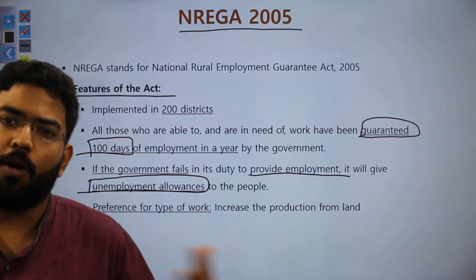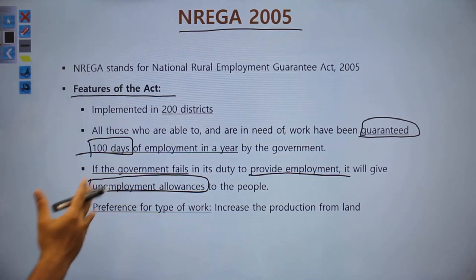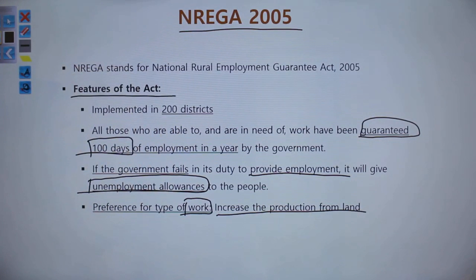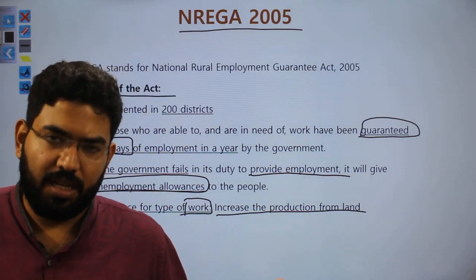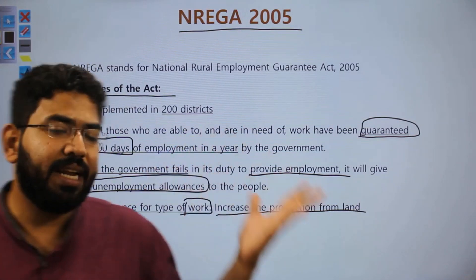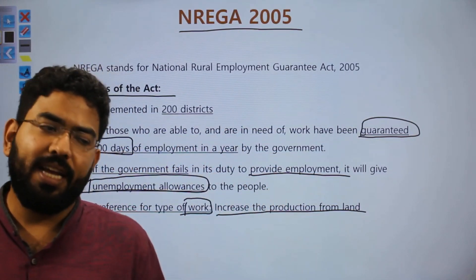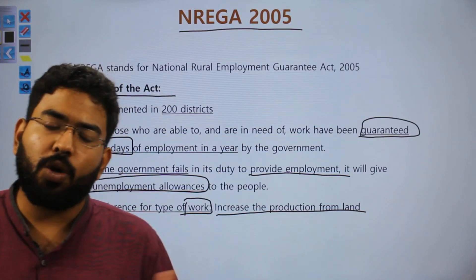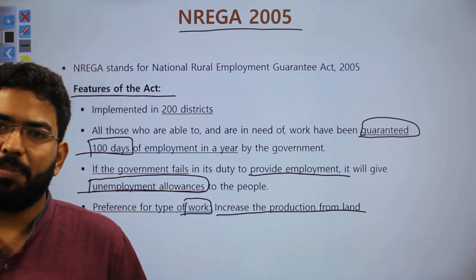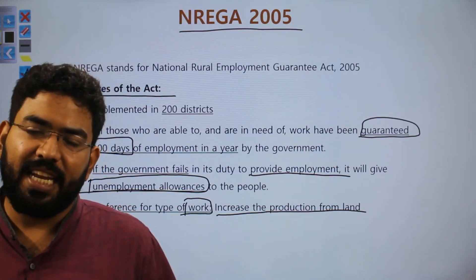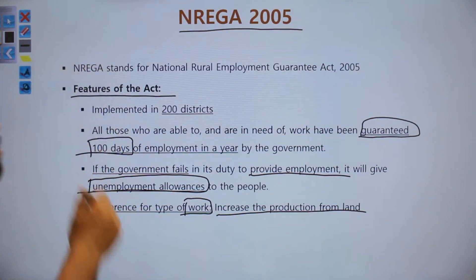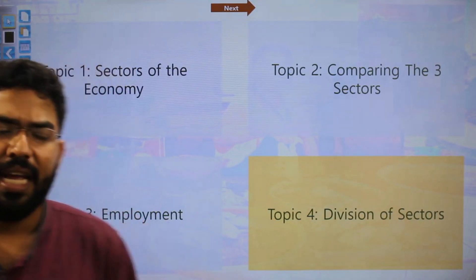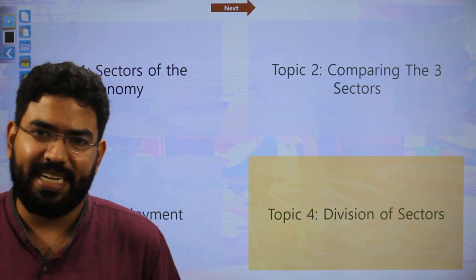The type of work under NREGA is focused on increasing production from land. People are asked to build rainwater harvesting areas, better irrigation channels, canals, and roads in rural areas — all of which help increase agricultural production. This was the short-term fix the government came up with through NREGA. In the next video we'll be discussing the division of various sectors. Thank you so much.